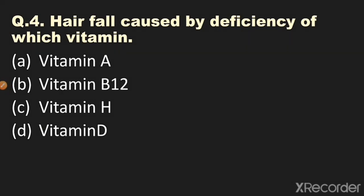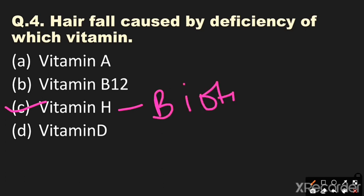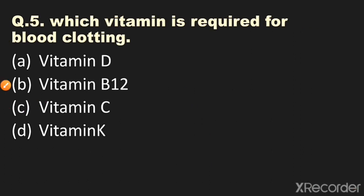Question number four: Hair fall is caused by deficiency of which vitamin? Options: A) Vitamin A, B) Vitamin B12, C) Vitamin H, D) Vitamin D. The answer is option C, Vitamin H. Vitamin H is also called Biotin and also called Vitamin B7. Deficiency of Vitamin H causes hair fall.